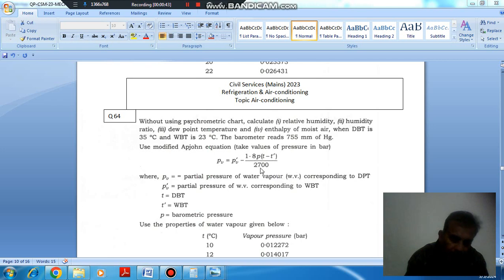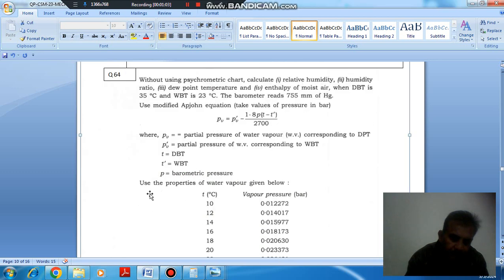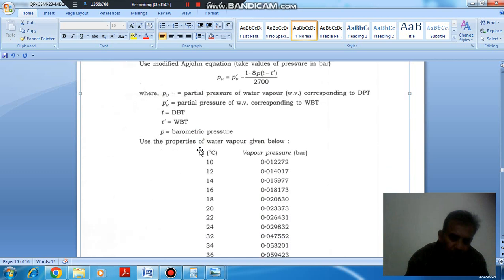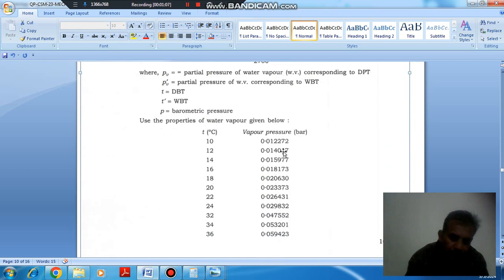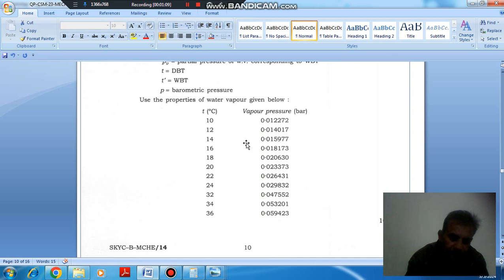P_V is equal to P'_V minus 1.8 P bracket T minus T' divided by 2700, where P_V is partial pressure of water vapor corresponding to DBT, P'_V is partial pressure corresponding to WBT, T is DBT and T' is WBT. P is barometric pressure. Use properties of water vapor given below. These are the temperatures and these are the vapor pressures.